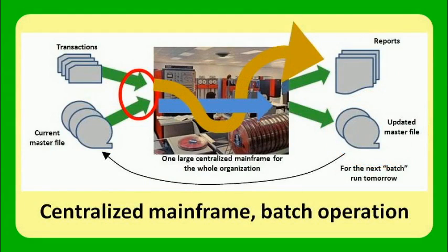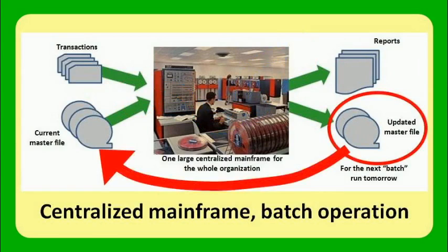As a byproduct, reporting is produced. At a minimum, this reporting would indicate what happened to each transaction as it interacted with the master file. If there were something wrong with the transaction data, it would have failed and that would be reported in one or more documents so that it could be cleaned up and resubmitted on the next cycle. The updated master file then becomes the current master file, and another update cycle the next day would use it as the current master file.